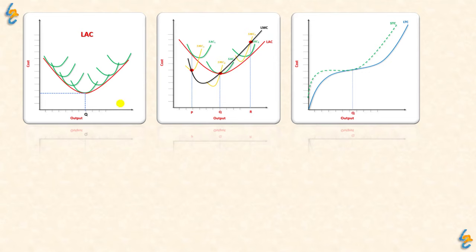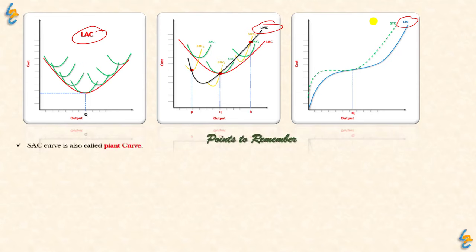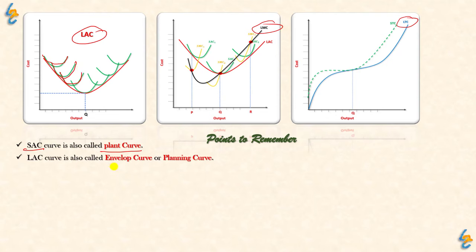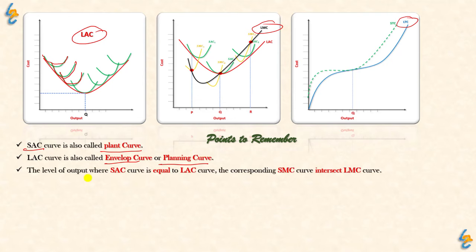So we have covered three curves: long run average cost, long run marginal cost, and long run total cost. Important points to remember: first, the short run average cost curve is also called the plant curve. Second, the long run average cost curve is also called the envelope curve and the planning curve. Third, the output level where short run average cost equals long run average cost is the optimum output.